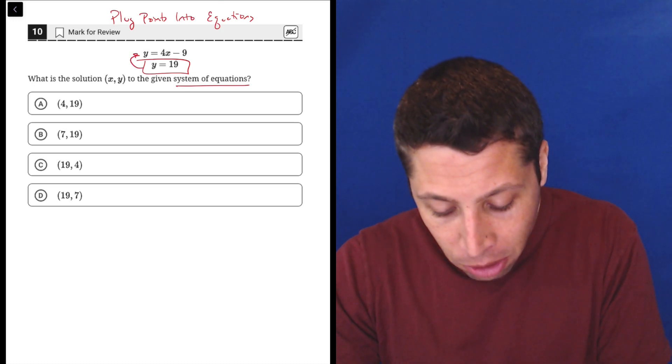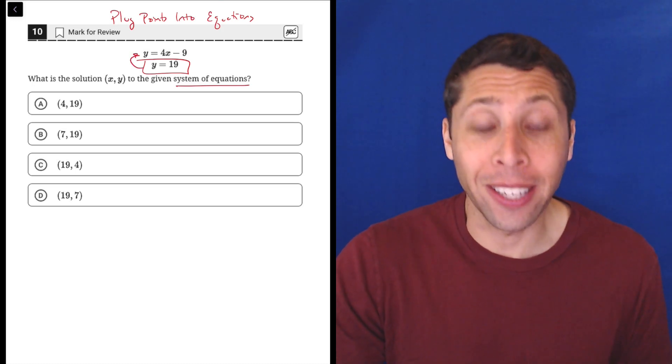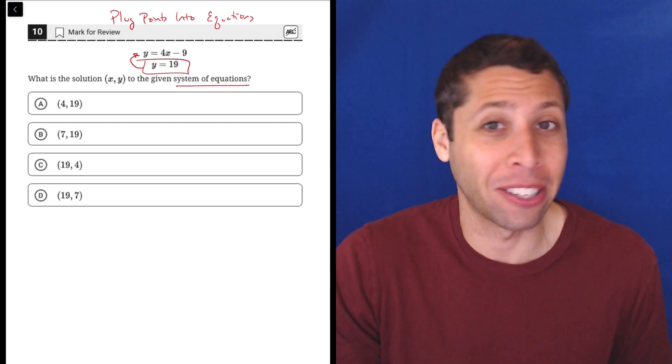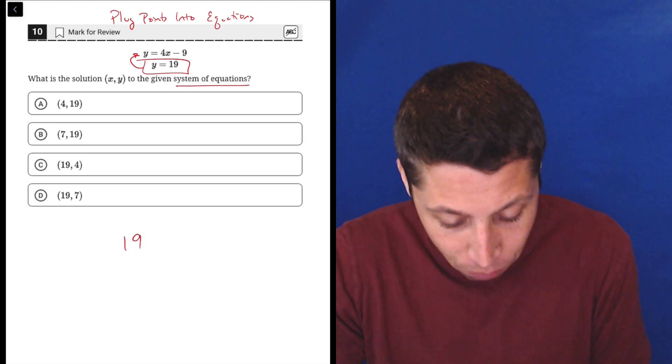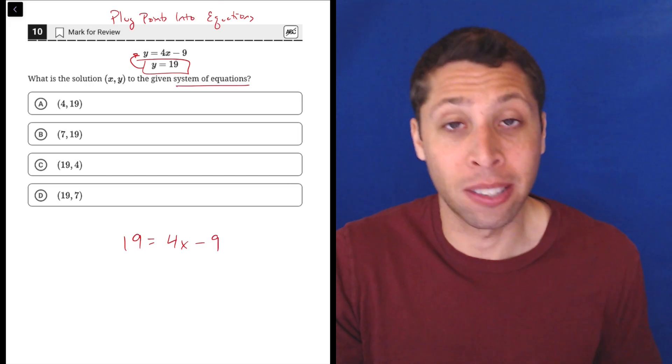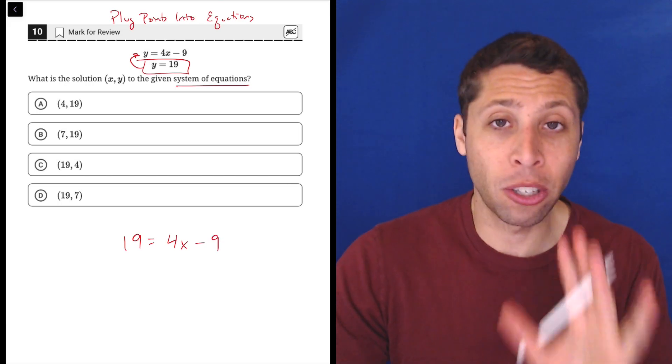If y is 19, we can substitute that in for the y in the other equation. Suddenly, we don't really have a system of equations anymore. We just have one simple algebra equation that we can solve. Now, before we do that, I will say two other things.